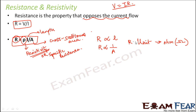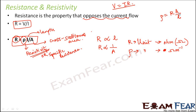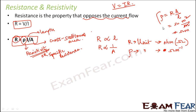The unit for resistance is ohm. For resistivity, the unit is ohm-meter. This is because resistivity equals resistance × A/L; the unit for area is m² and for length is m, so the unit for resistivity works out to ohm·meter (Ω·m).